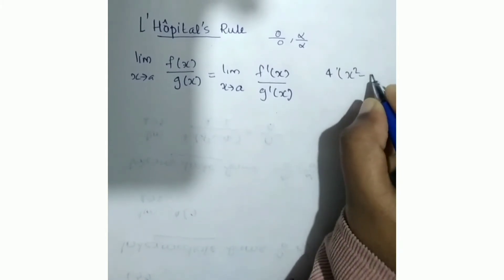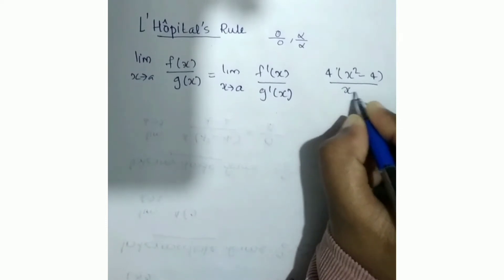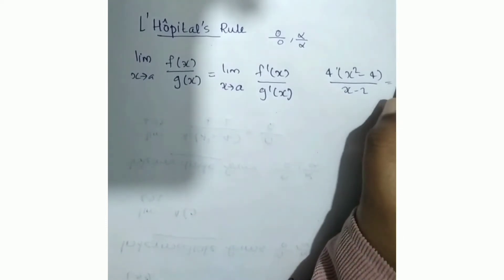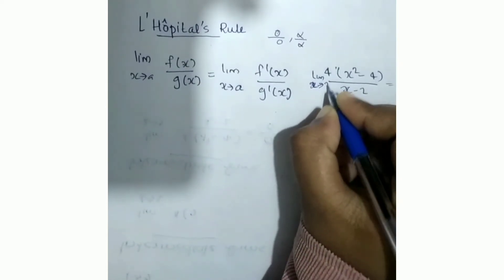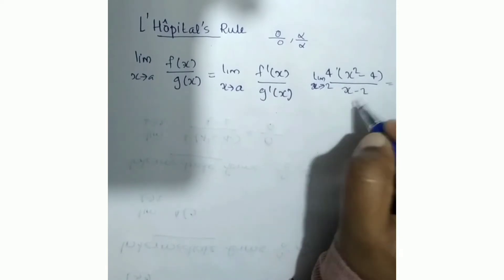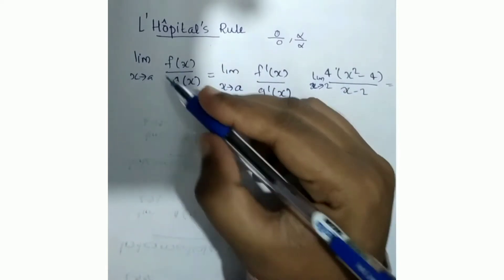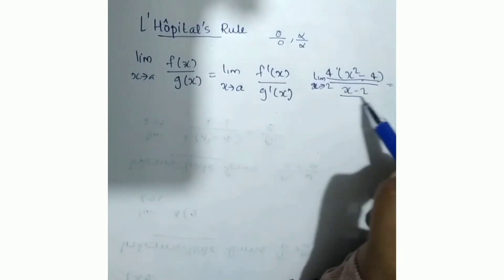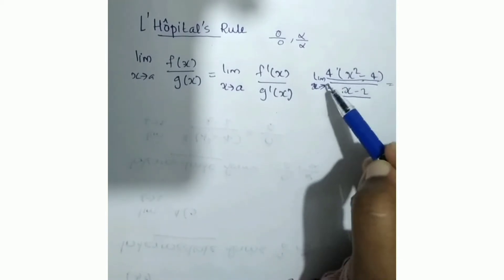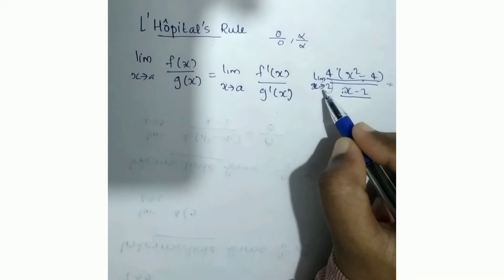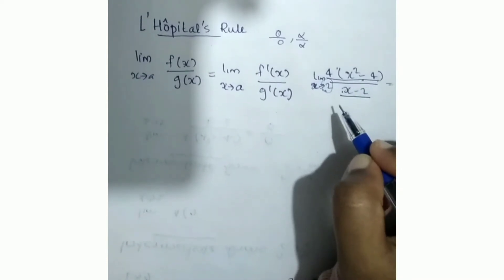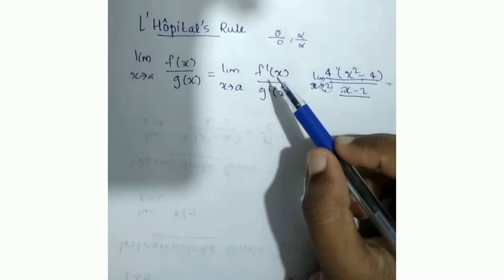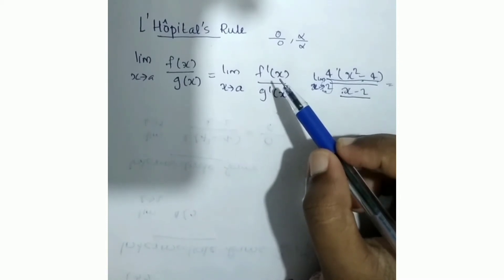In the exam, we evaluate: limit x tends to 2 of (4x² - 4) divided by (x - 2). This gives 0 by 0, which is the indeterminate form. The formula says: limit x tends to a. We differentiate the numerator and the denominator separately. We will differentiate x² and at the same time apply the L'Hôpital's rule.